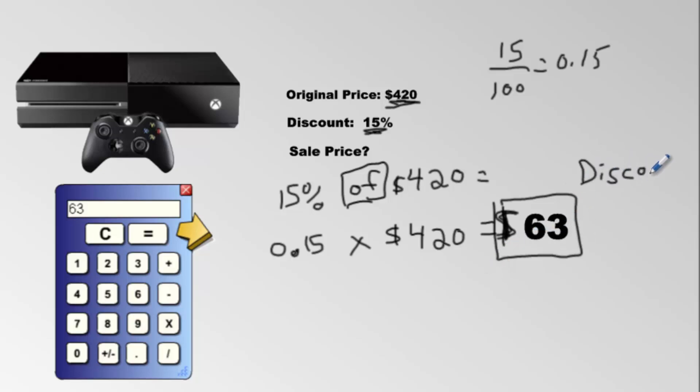And you know what discount means? Discount means it's getting cheaper. It's getting cheaper by $63. So that's not the new price. That's just how much cheaper it's getting. It starts at $420 and it gets cheaper by $63. Cheaper means the price is going down. We minus.